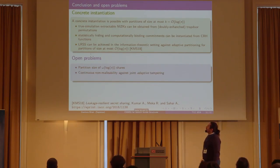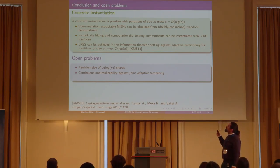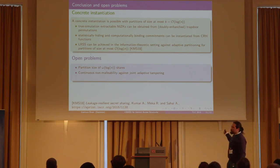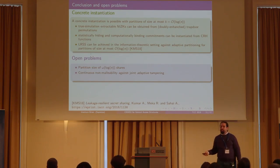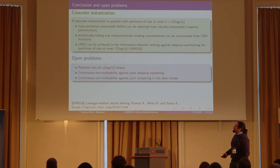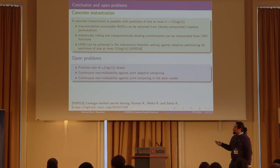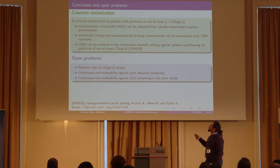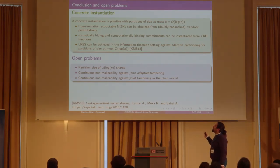As a second open problem, we wonder if it is possible to achieve continuous non-malleability against joint adaptive tampering rather than selective. Although our underlying leakage-resilience sharing scheme achieves security against adaptive partitioning, our proof strategy breaks down if we allow the attacker to perform tampering queries with adaptive partitioning. As a third open problem, we leave it open to find a similar security notion also valid in the plain model — in other words, whether we can obtain continuous non-malleability against joint tampering in the plain model.